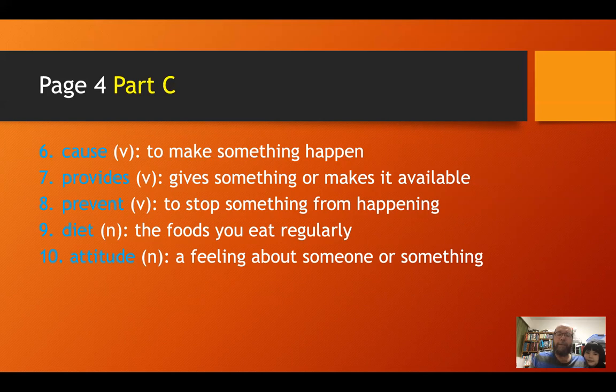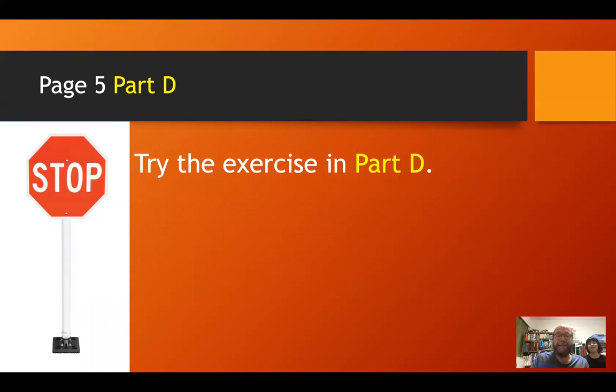Number ten: attitude — a feeling about something or someone. It's actually the feeling we have towards something and the way we act towards it. For example, 'that kid hates school, he's got a bad attitude about school,' and he shows it through the way he expresses himself. So it's both the feeling we have and the way we react towards something or someone. Now, page five, part D — stop the video and give it a try.